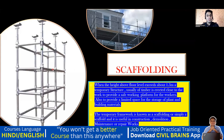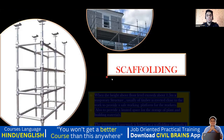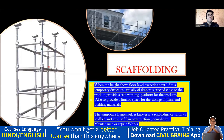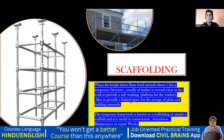Now, what is scaffolding? Scaffolding looks similar — you have a cup lock system here too. The difference is that scaffolding is a temporary arrangement to help people stand and work — you are not putting formwork on it. When the height above floor level exceeds about 1.5 meters, a temporary structure, usually of timber, is erected close to the work to provide a safe working platform for workers and limited storage of plant and building materials. This temporary framework is known as scaffolding.